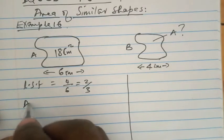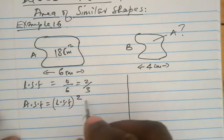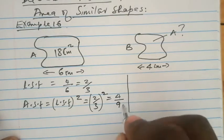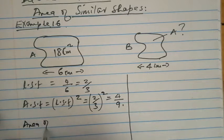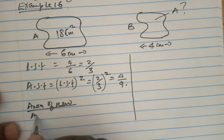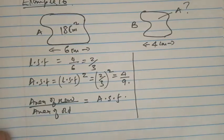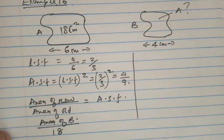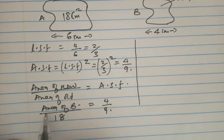With the linear scale factor known, the area scale factor is simply the linear scale factor squared. So we have 2 over 3 squared, which gives us 4 over 9 — that is the area scale factor. We also know that the area of new over the area of old should equal the area scale factor, meaning the area of B over 18 equals 4 over 9.